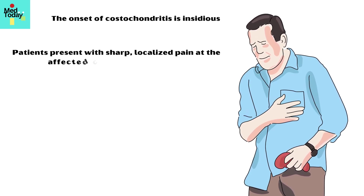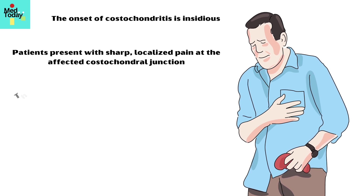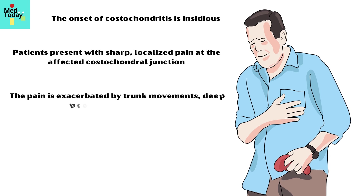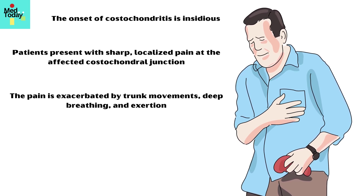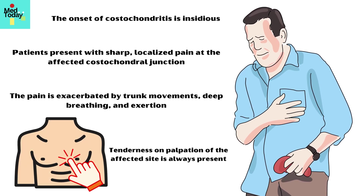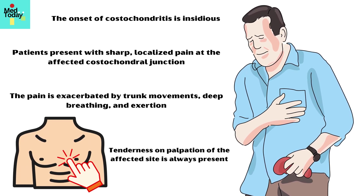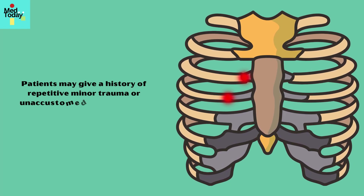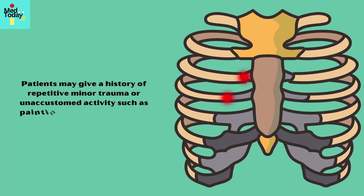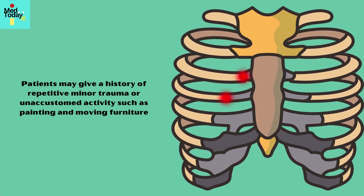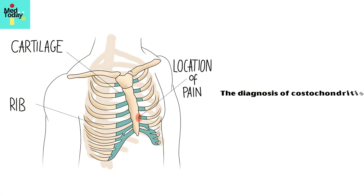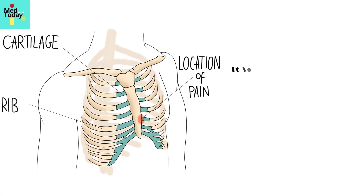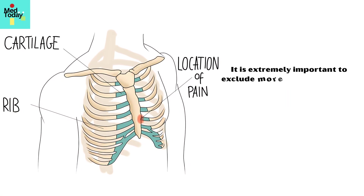The onset of costochondritis is insidious. Patients present with sharp, localized pain at the affected costochondral junction. The pain is exacerbated by trunk movements, deep breathing, and exertion. Tenderness on palpation of the affected site is always present. Patients may give a history of repetitive minor trauma or unaccustomed activity such as painting or moving furniture.